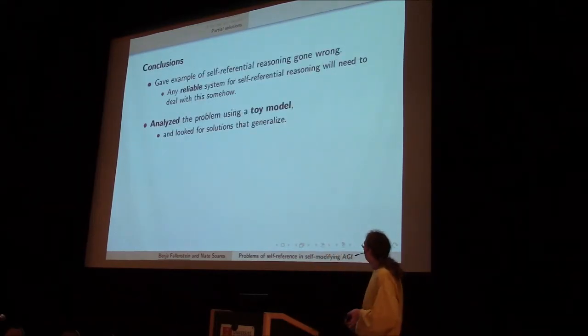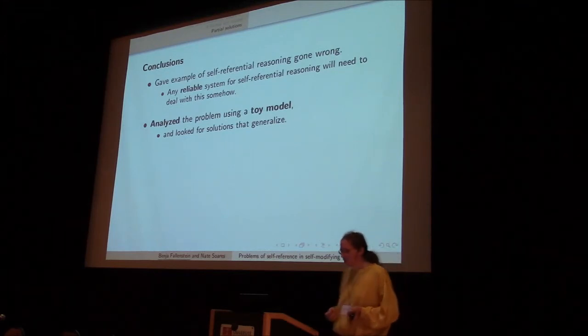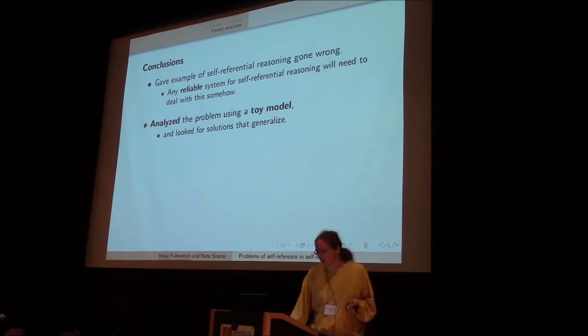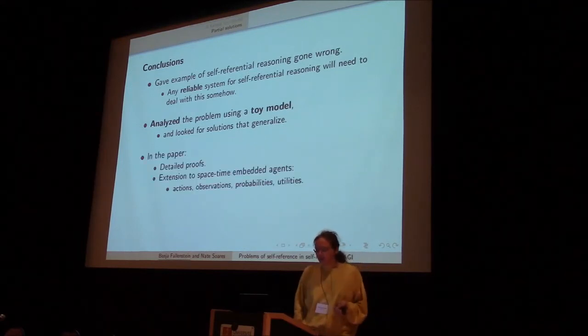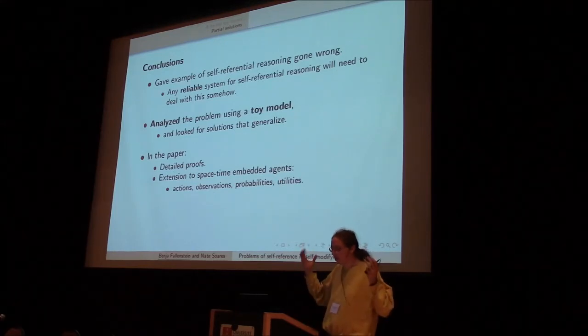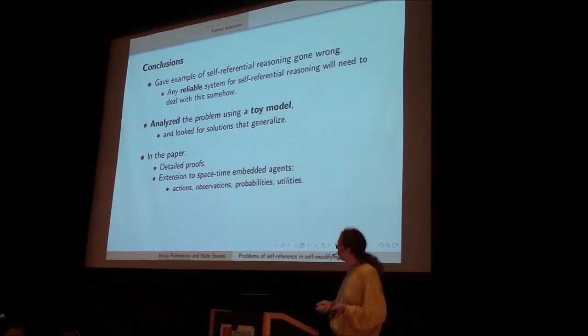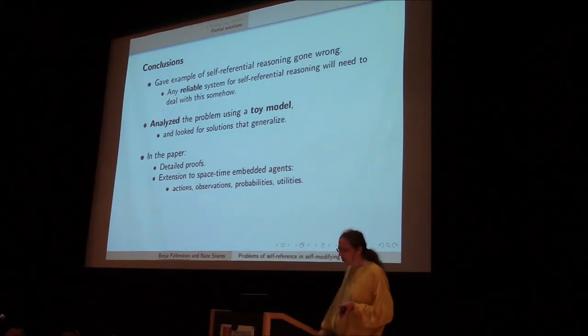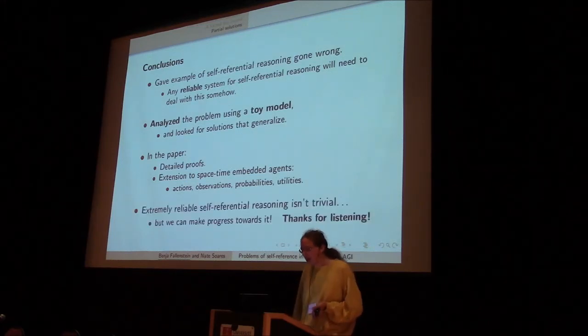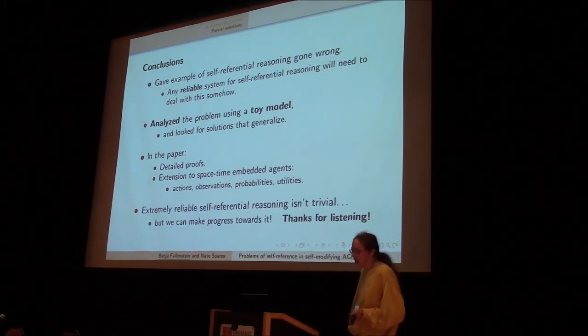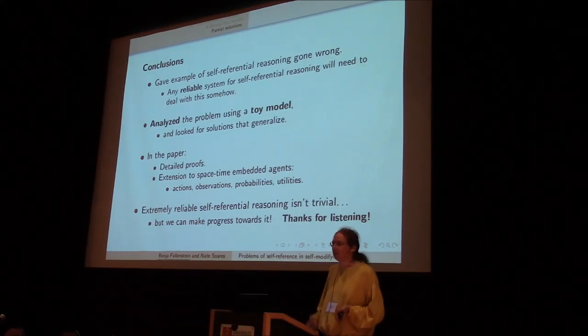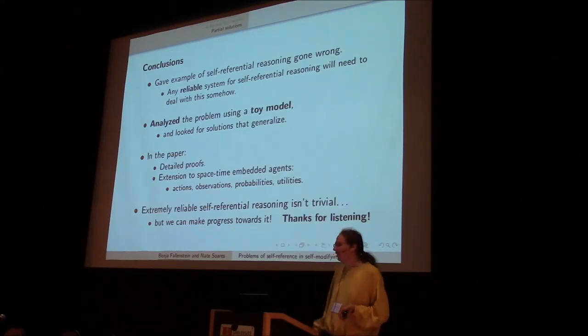So conclusions. I gave an intuitive paradox. I showed how to analyze this with a toy model based on logic. In the paper we give detailed proofs, and we show how to extend this to actual agents which act in the world and which are space-time-embedded, which I very much care about but don't have time to go into here. And so in conclusion, I think that extremely reliable self-referential reasoning is possible, but it's not trivial. There we go. Thank you for listening.